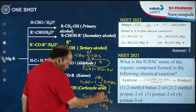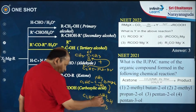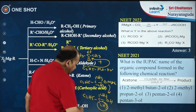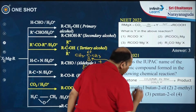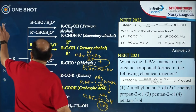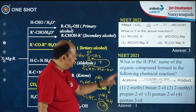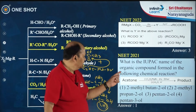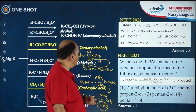Now let us give the IUPAC name for this compound. Counting the carbons: 1, 2, 3, and 4. This is 2-methylbutan-2-ol. The answer should be option 1. Like this you get questions — this was from NEET 2021.